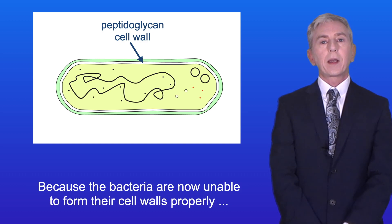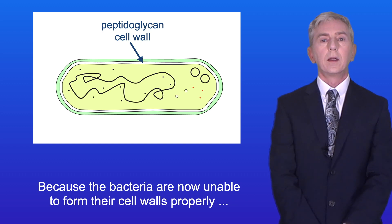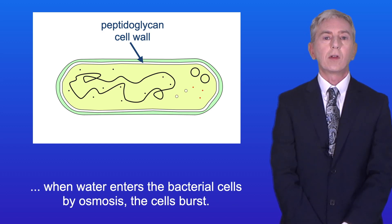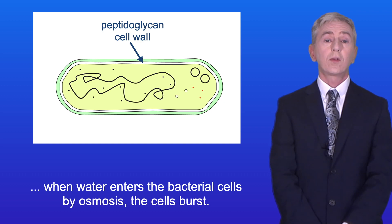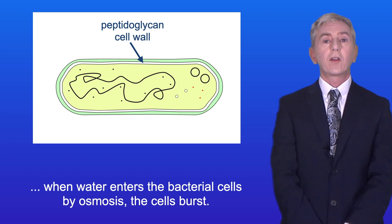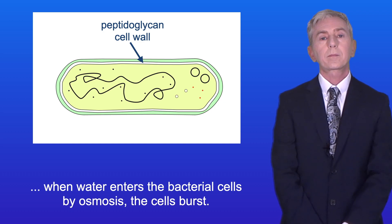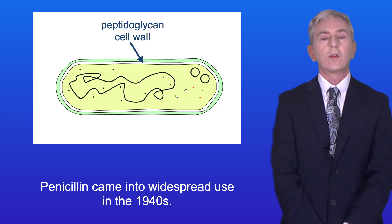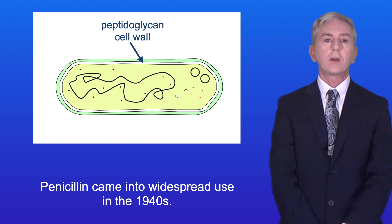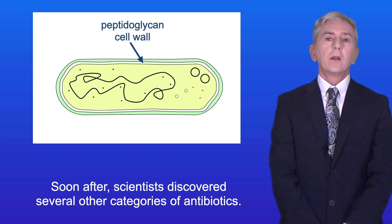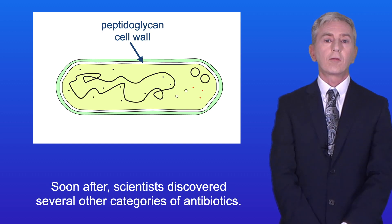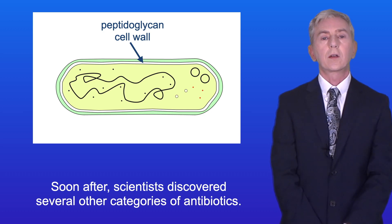Because the bacteria are now unable to form their cell walls properly, when water enters the bacterial cells by osmosis, the cells burst. Penicillin came into widespread use in the 1940s. Soon after, scientists discovered several other categories of antibiotics.